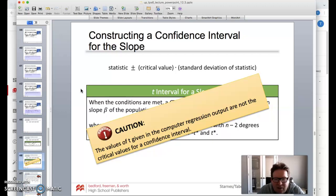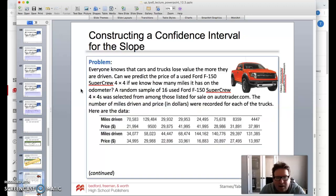Remember, the values of T given in the computer regression output are not the critical values for a confidence interval. Remember that as we move forward.